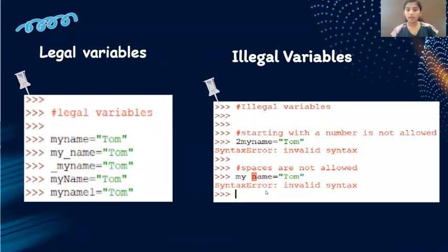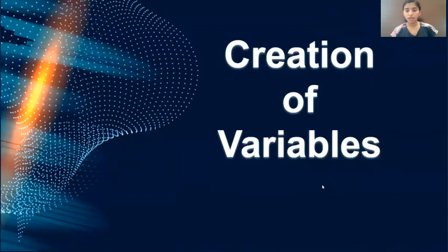As we saw already, variables should not start with a number but this is breaking our rule so this is an illegal variable. So there will be a syntax error telling that it is an invalid syntax. And here I am leaving a space between my and name so it will be treated as syntax error and it will tell me that it is invalid syntax. I hope you are clear with the rules to write variable.